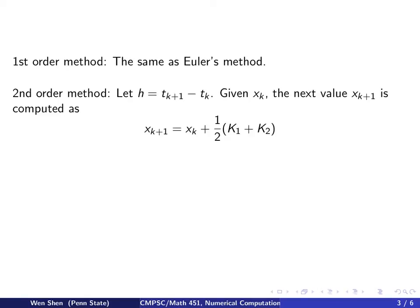The second order method now is different. Fix some notation, let h be the grid size, time step size from tk to tk plus 1. And given an xk, we want to compute the next value.